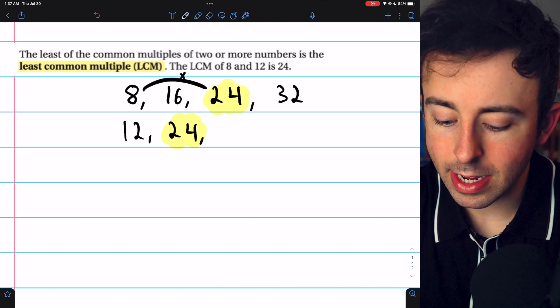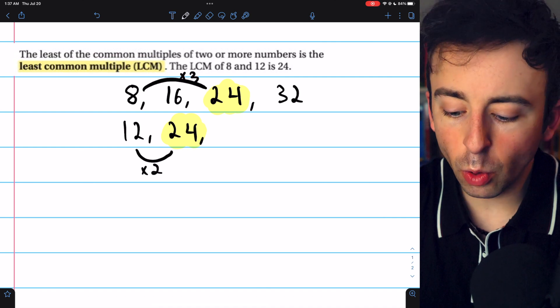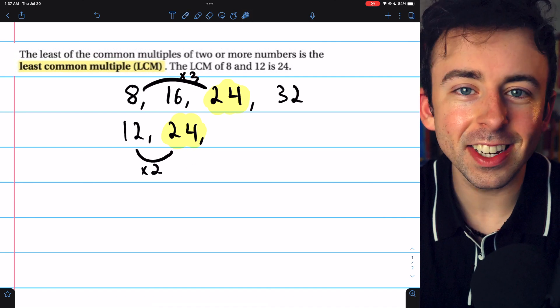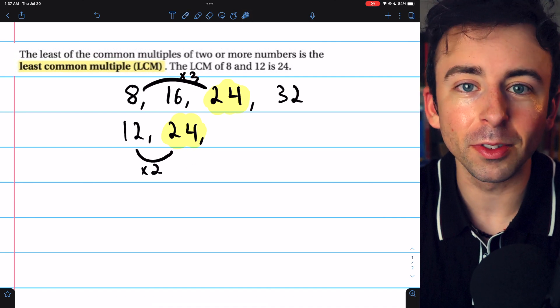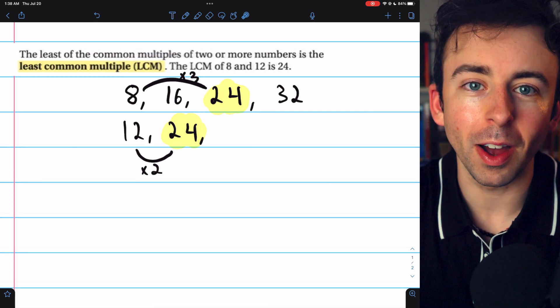8 times 3 gives us 24, and 12 times 2 gives us 24. The weakness of this strategy is you never know just how many multiples you're going to have to list before you find a common one. But it sometimes works fine.